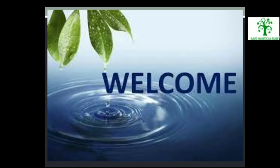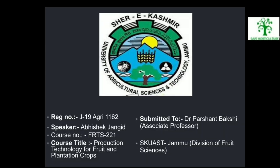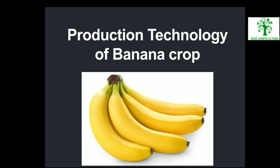Hello everyone, welcome. Myself is Abhishek Jangid and my registration number is J19 Agri 1162, course number FRTS 221, course title Production Technology for Fruit and Plantation Crops. Before starting my presentation, I would like to thank course instructor Dr. Prashant Bakshi sir, who gave us this opportunity. Now, I am starting my presentation on Production Technology of Banana Crop.